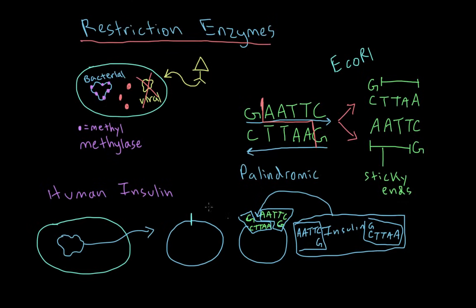Now we have the insulin gene inserted into the bacterial DNA. This allows the bacteria to synthesize human insulin. You then take that insulin, purify it, and now you can have a whole bunch of insulin made very cheaply and very quickly for diabetic patients that might need it. That's one example of how restriction enzymes can be used in the pharmaceutical and biotechnological world.